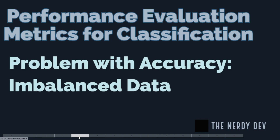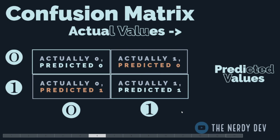So avoid using accuracy as a metric when you have imbalanced data. Now let us move to another concept called the confusion matrix. As a simple example, let us take the case of binary classification, where we have two classes — class 0 and class 1 — giving us a 2×2 matrix with two rows and two columns.